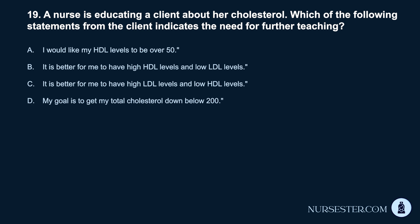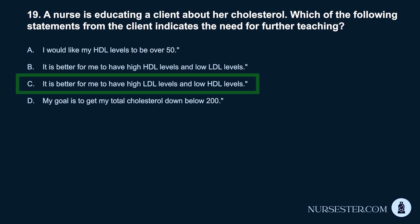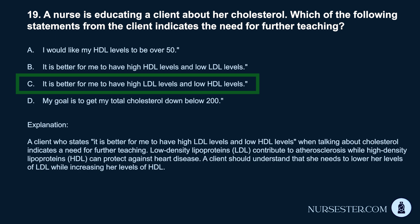Question 19. A nurse is educating a client about her cholesterol. Which statement indicates the need for further teaching? a. 'I would like my HDL levels to be over 50.' b. 'It is better for me to have high HDL levels and low LDL levels.' c. 'It is better for me to have high LDL levels and low HDL levels.' d. 'My goal is to get my total cholesterol down below 200.' Correct answer: c. A client stating it is better to have high LDL and low HDL levels indicates a need for further teaching. Low-density lipoproteins (LDL) contribute to atherosclerosis, while high-density lipoproteins (HDL) protect against heart disease. The client should lower LDL while increasing HDL.